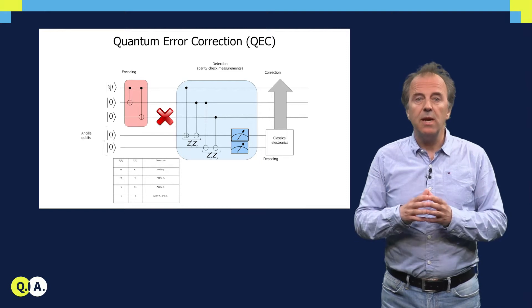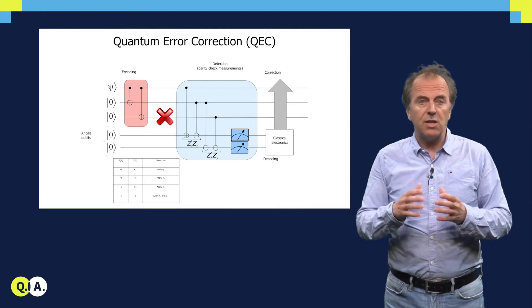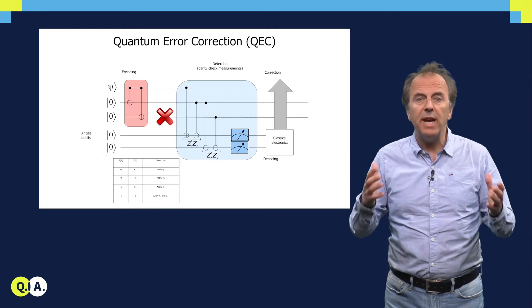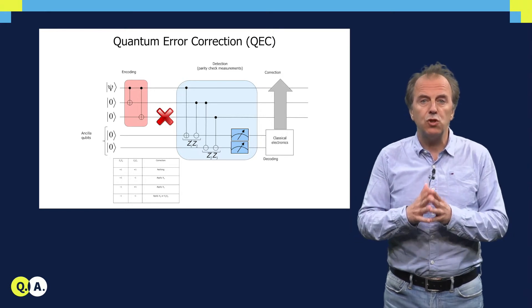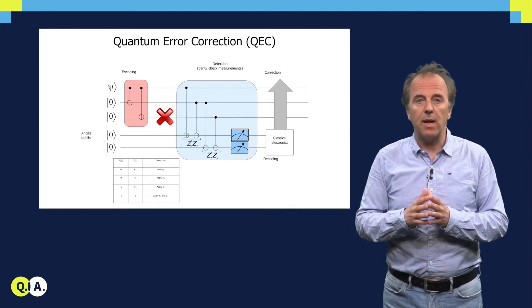Quantum error correction is a very important functionality of this microarchitecture, as certain estimates show that up to 90% of what a quantum processor is doing is actually related to that quantum error correction activity.